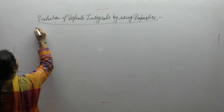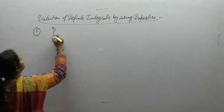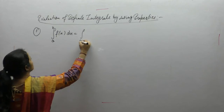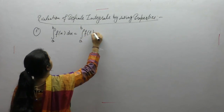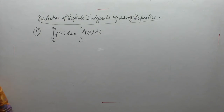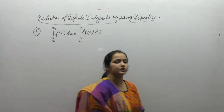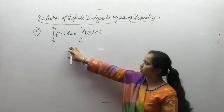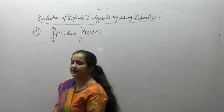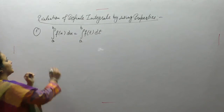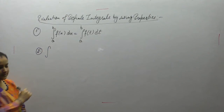Let's start. The first property is: integral of a to b of f(x) dx is equal to integral of a to b of f(t) dt. If the variable changes from x to t, the integration is independent of the change of variable — as long as the limits are the same, both integrals are equal.